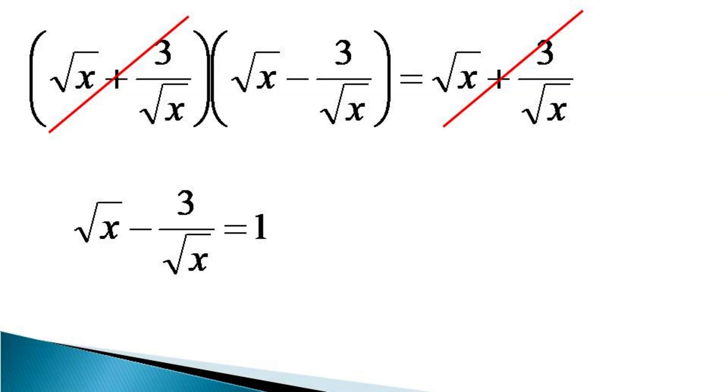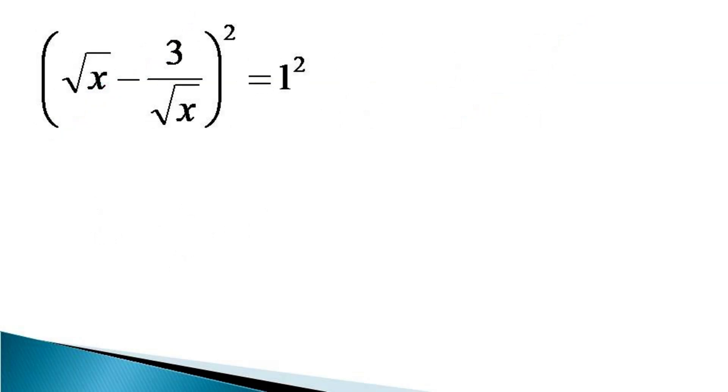Here we square both sides to get root x minus 3 by root x whole squared is equal to 1 squared. Expanding the left-hand side, we get x plus 9 by x minus 2 into root x into 3 by root x is equal to 1.